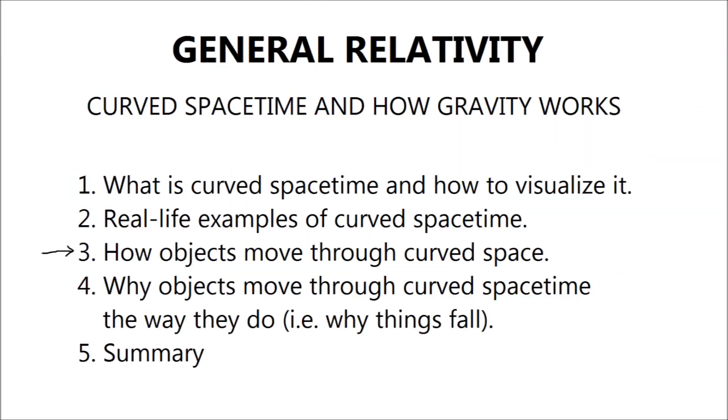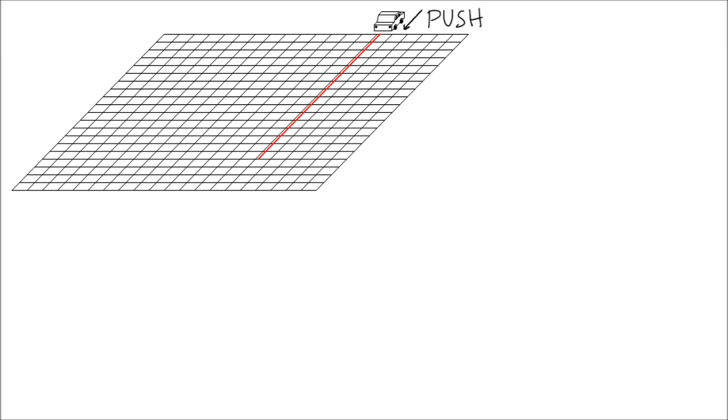But first, let's discuss how things move through curved space. Take a small toy car. If you push the car gently across a flat surface, the car will go forward in a straight line. However, if there is a force pulling the car to one side, its path will be curved. Notice that when the car goes in a straight line, all its wheels travel the same distance. However, if the car turns, some wheels travel further than others.